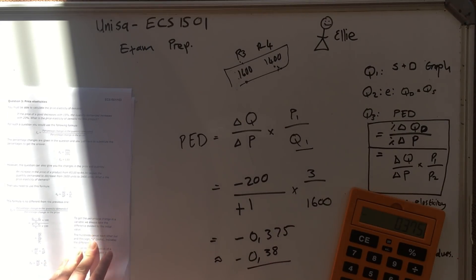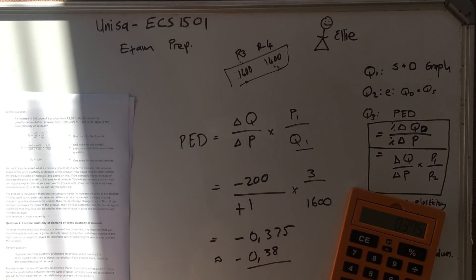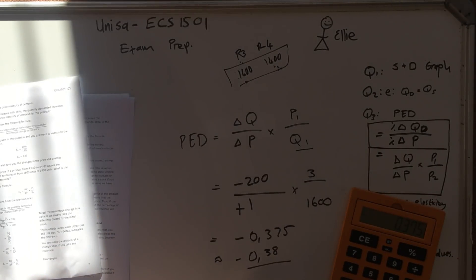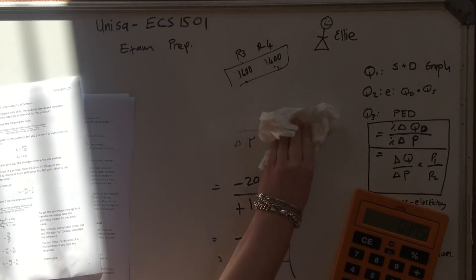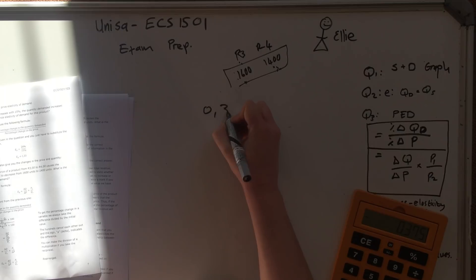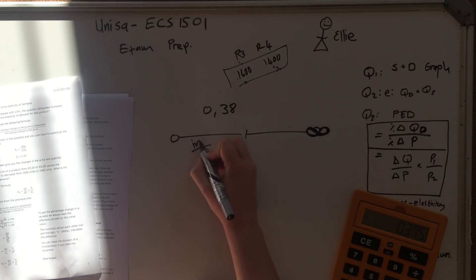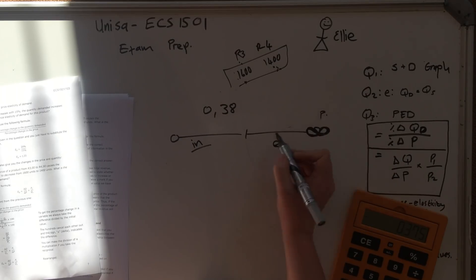Putting this into your calculator: minus 200 times 3 divided by 1,600 equals minus 0.375, which rounds to minus 0.38. We take the absolute value, so the answer is 0.38. If the price elasticity coefficient is smaller than one, it is inelastic; if it is bigger than one, it is elastic. There is also perfectly elastic and perfectly inelastic.